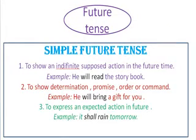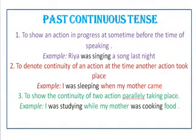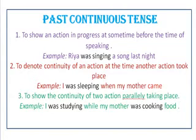Next is past continuous tense: to show an action in progress at some time before the time of speaking. Koi aisa action jo ki jab hum baat kar rahe hain, uske just pehle chal raha tha. Like: 'Rhea was singing a song last night.' Yahaan 'was' ka upyog hoga aur continuous tense hai toh '-ing' toh lagega hi. Present mein hoga 'Rhea is singing a song,' past continuous mein hoga 'Rhea was singing a song.'